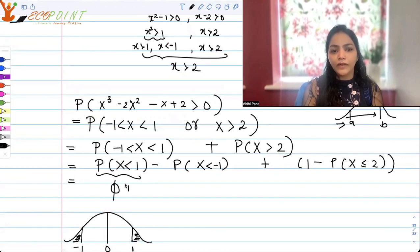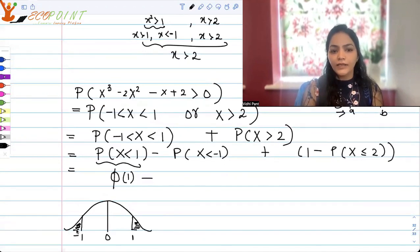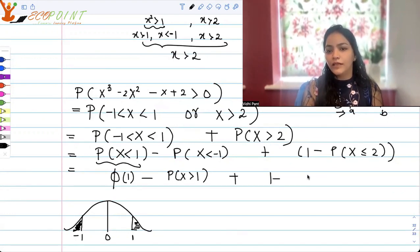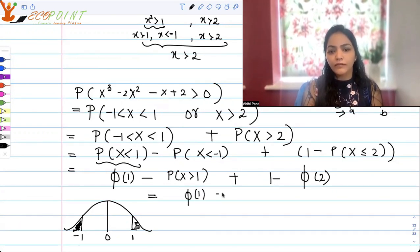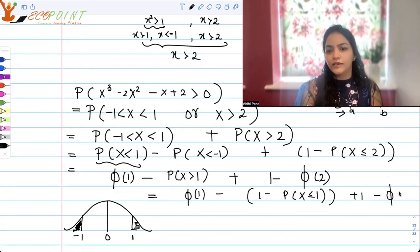So this clearly is phi(1). Minus probability X is less than -1, that is this. Well, this is same as probability X is greater than 1, right? This is same as probability X is greater than 1 plus 1 - phi(2) because that already we have a CDF.